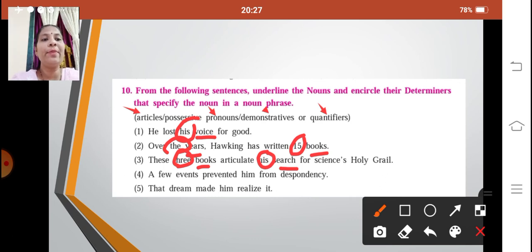Next: a few events prevented him from despondency. So which is the noun over here? The noun over here is events. And which is the determiner over here? Few. So that is the quantifier over here. Then: that dream made him realize it. So which is the noun over here? Dream. And what is the determiner? That. So the fifth sentence we have dream as the noun and that as the determiner.